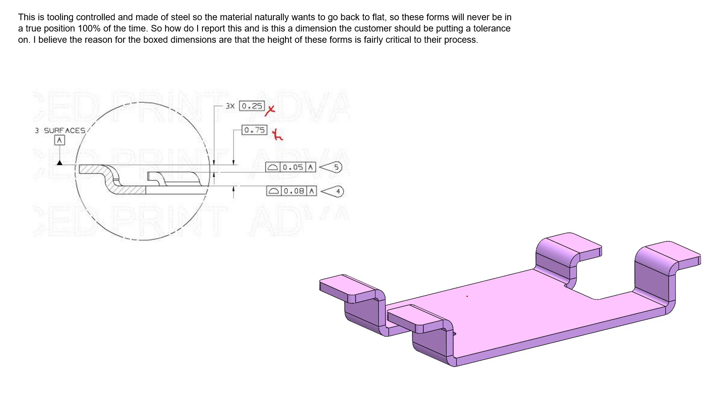So let's take a look at this drawing submitted by the student here. We can see the face of three surfaces are establishing datum feature A, and we're controlling two other faces specifically in this view at least with profile of a surface of 0.05 with respect to datum A. We can see we have two basic dimensions here identified with the red X's next to them telling us where those surfaces should be.